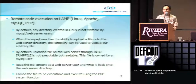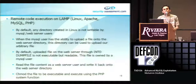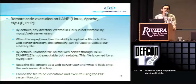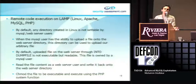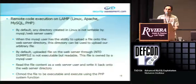Remote code execution on LAMP has one limitation: by default, directories created in Linux are not writable. However, in some cases you will find applications that require directories to be writable, such as applications that allow users to upload content. If we find this type of application, we can abuse the functionality by uploading our arbitrary file into that directory. Also, files created through SELECT INTO DUMPFILE are not executable by default, but we can use PHP to read the file contents and write to another file, then change the permission using a PHP system function.